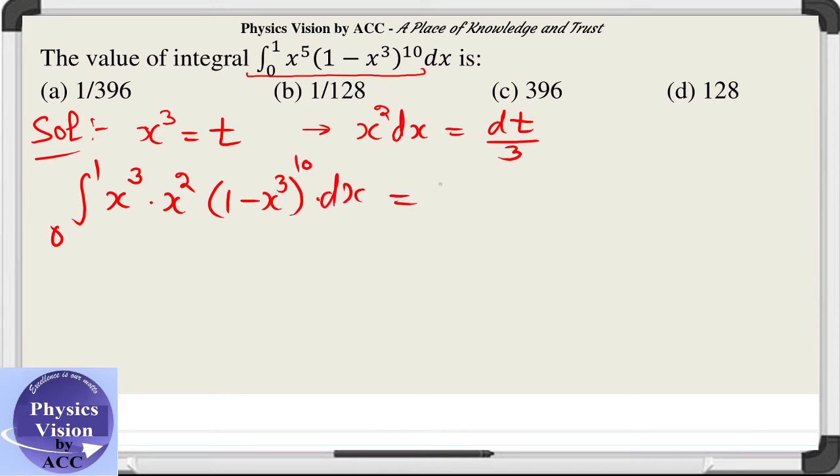Now I am substituting the values. When x is 0, t is 0. This is 0. When x is 1, t is 1. x cube is t, x square into dx is dt by 3, and the bracket becomes 1 minus t power 10.